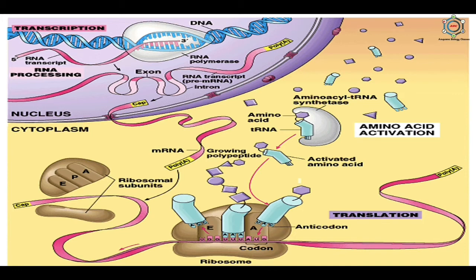While bound to mRNA, tRNA gives up its amino acid. With the help of rRNA, bonds form between amino acids as they are brought one by one to the ribosome, creating a polypeptide chain. The chain keeps growing until a stop codon is reached. After a polypeptide chain is synthesized, it may undergo additional processing — it may assume a folded shape due to interactions between its amino acids, or bind with other polypeptides or with lipids or carbohydrates. Many proteins travel to the Golgi apparatus to be modified for their specific function.